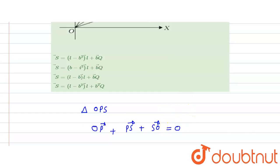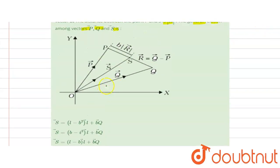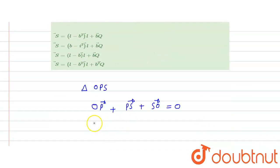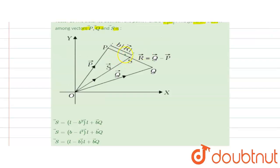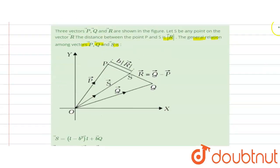Here, OP is the vector p. We can write the p vector. Now, PS equals the mod of r vector — that is b times mod of r vector. The direction of r is from s, and s is the direction of r, so the distance between the two points is in the direction of r.